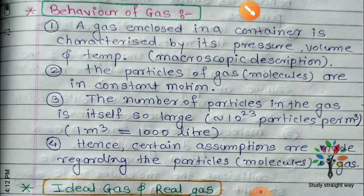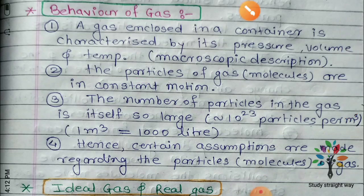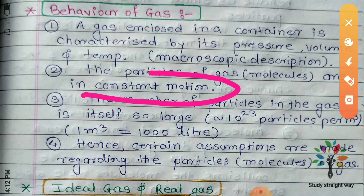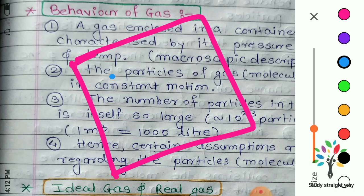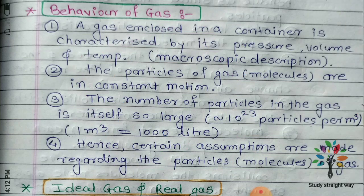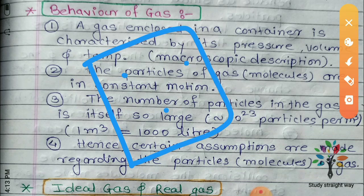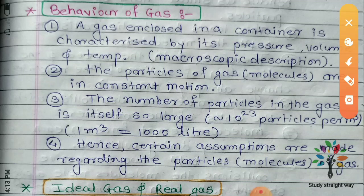The particles are in constant motion. The container is still while the particles are in constant motion. The velocity is constant and the number of particles in the gas remains constant.